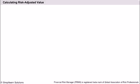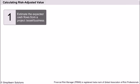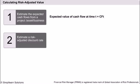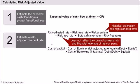Calculating risk-adjusted value. Pursuing value-maximizing risk strategies requires that decision-makers assess the value of the risky asset. We will learn to determine the value of the risky asset by discounting the cash flows from the asset to present value. The three steps involved are outlined in the slide. The first step involves estimating the cash flows from the project, asset or business — let us keep the cash flows at time period T as CFT. In the second step, we find the risk-adjusted discount rate that will be used to discount the cash flows in the future.